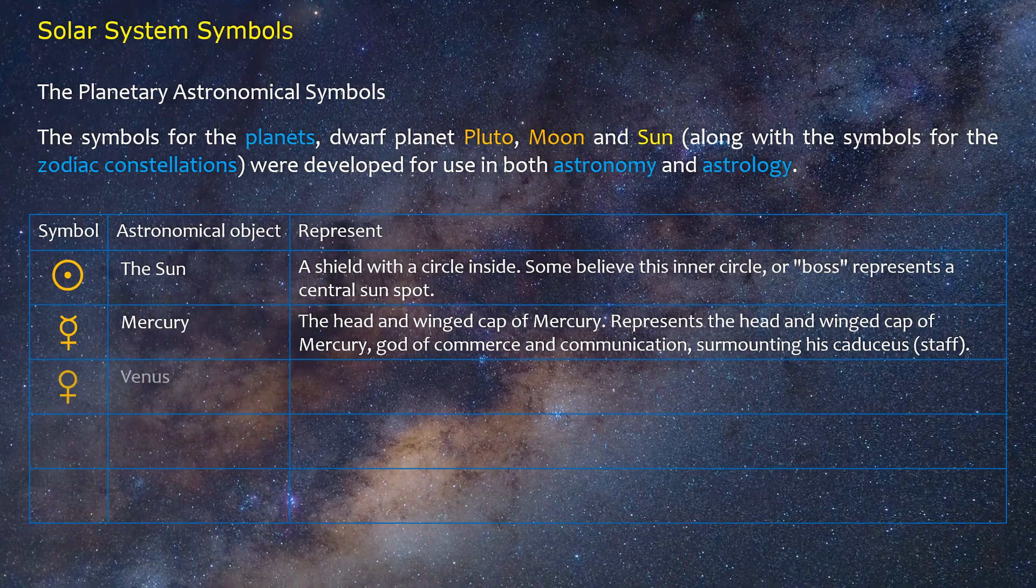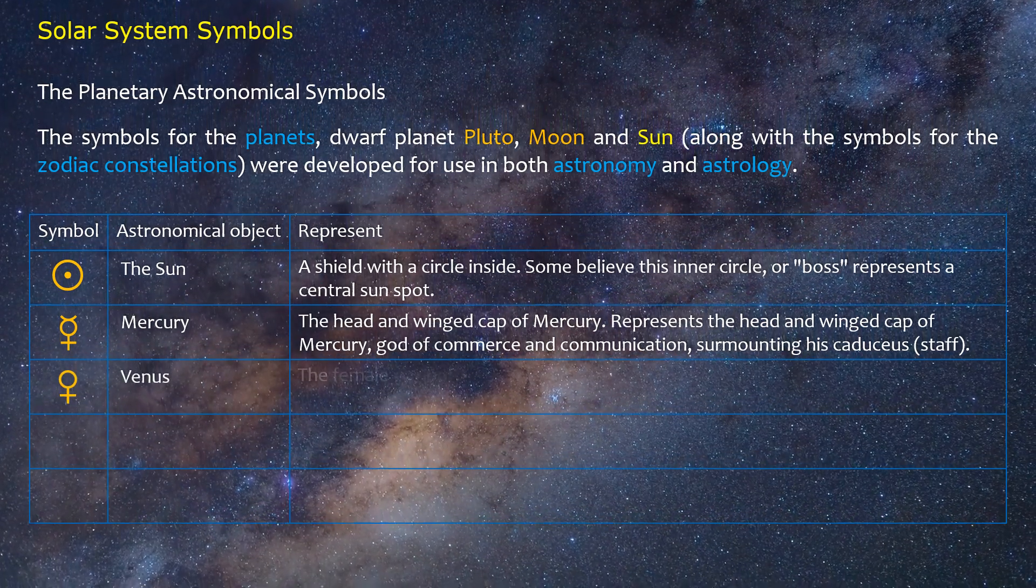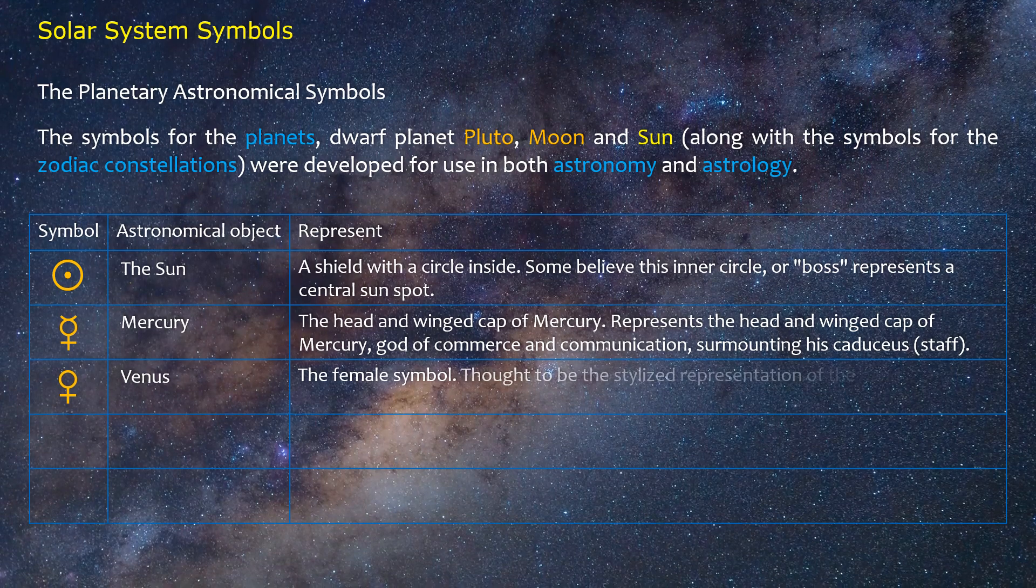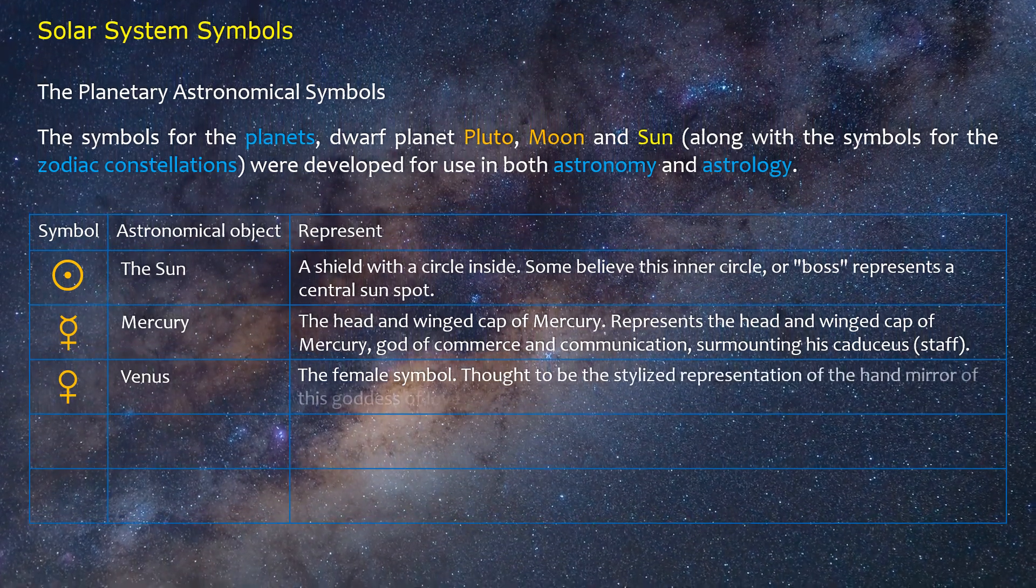Venus: The female symbol. Thought to be the stylized representation of the hand mirror of this goddess of love.